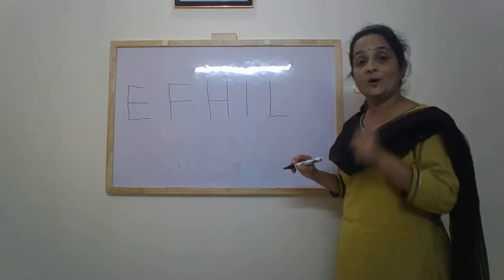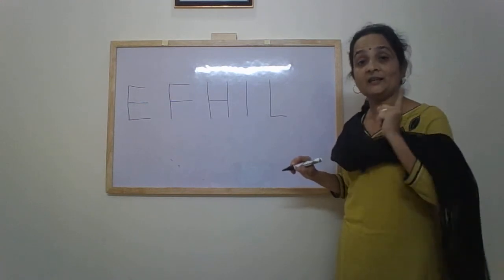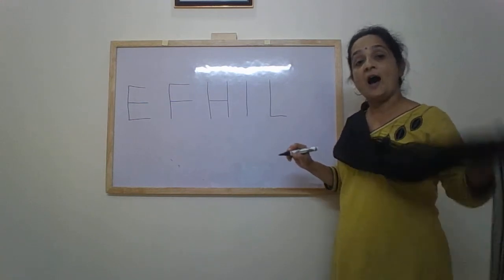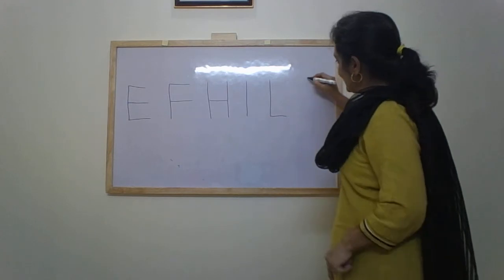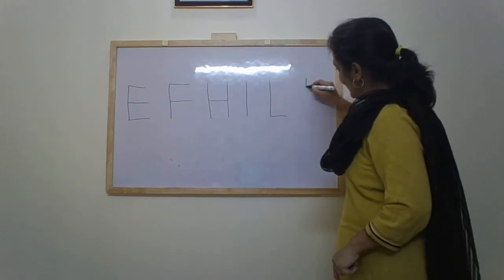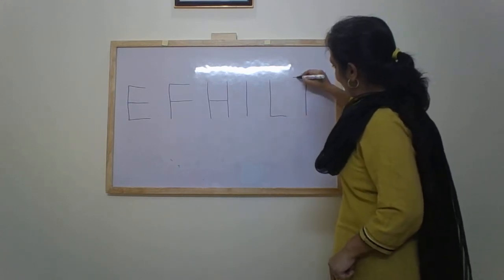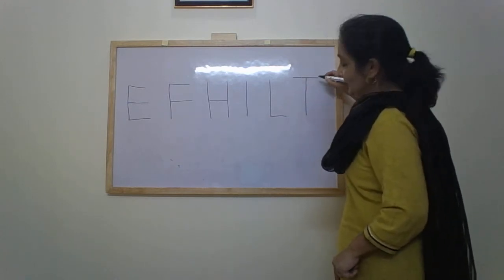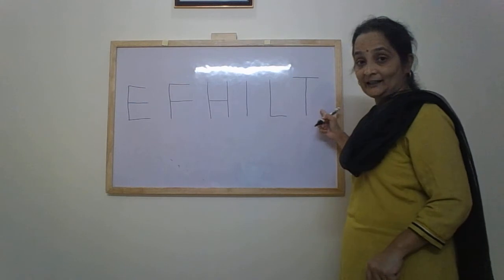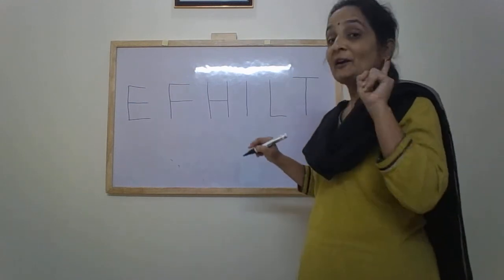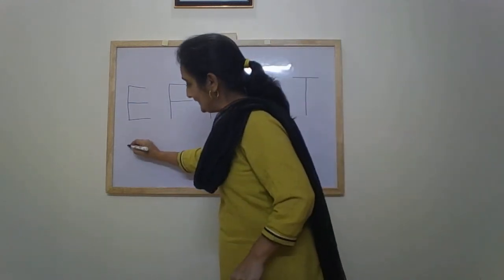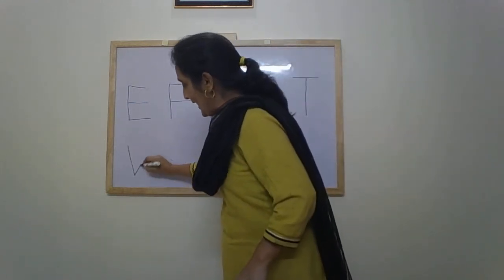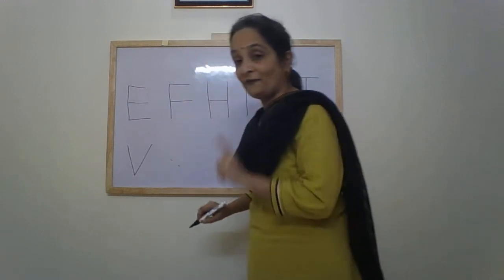M, N, O, P, Q, R, S, T. For T: standing line, sleeping line on top — T. Then U, V. For V: down, up — V.